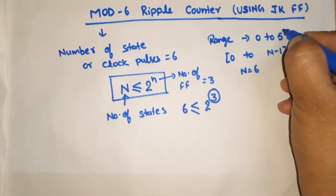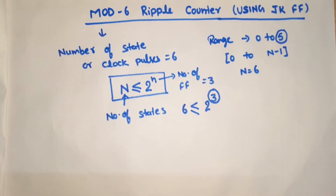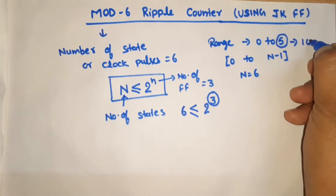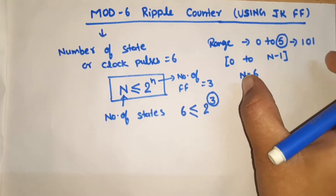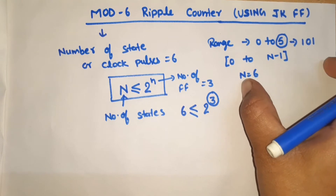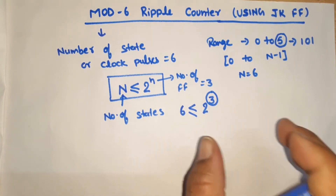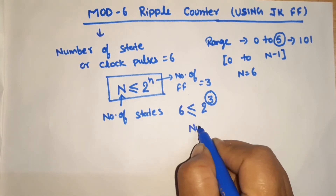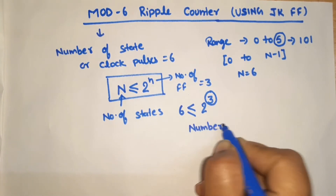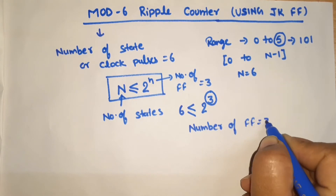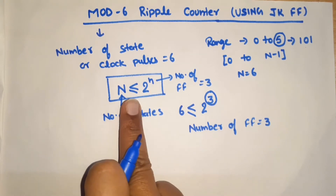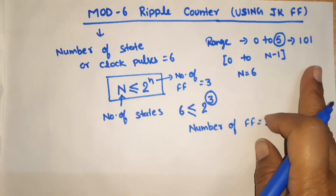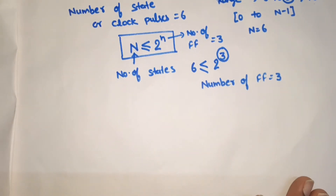Another method: take the highest range value, which is 5, and write it in binary — that is 101, which requires a minimum of 3 bits. So either method gives us 3 flip-flops. This formula can also be useful for 2-mark questions asking how many flip-flops are required for a Mod N counter.